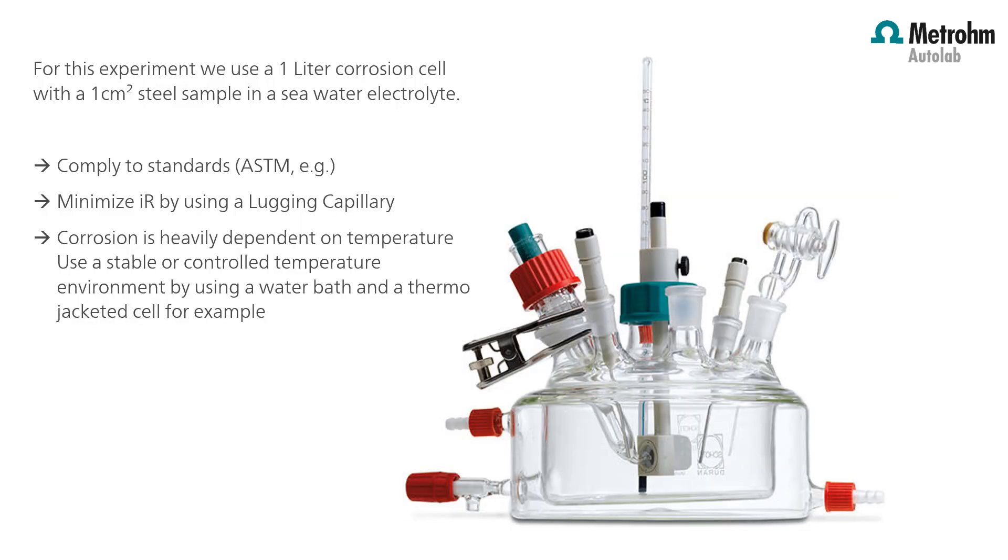For this experiment, we use a 1-liter corrosion cell with a 1 square centimeter steel sample in a seawater electrolyte. This complies to the standards of ASTM for example. We can minimize the IR drop by using a Luggin capillary so the reference electrode is very close to the surface of the working electrode. The corrosion is heavily dependent on temperature. You use a stable or controlled temperature environment by using a water bath and the thermostat jacket itself for example.